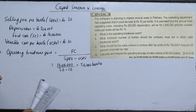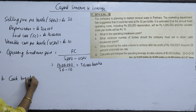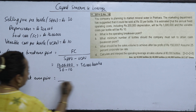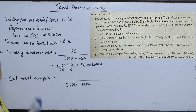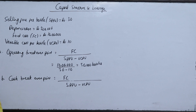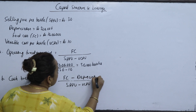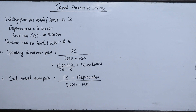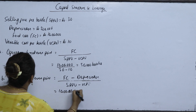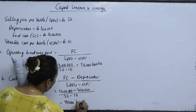What minimum number of bottles should the company sell to attain the cash break-even point? For cash break-even, we exclude non-cash expenses. Non-cash expenses include depreciation. The formula is: (Fixed Cost minus Depreciation) divided by (SP per unit minus VC per unit) = (10,00,000 minus 2,00,000) divided by (30 minus 10) = 8,00,000 divided by 20 = 40,000 bottles.